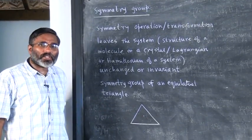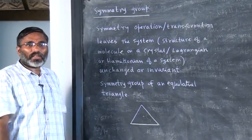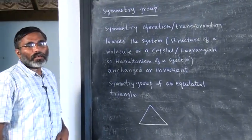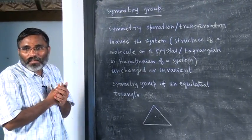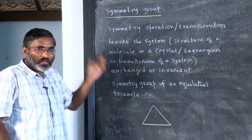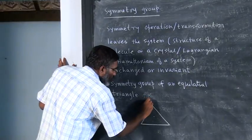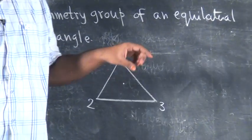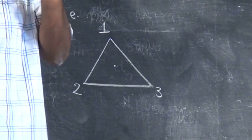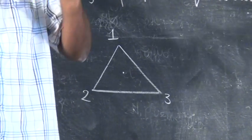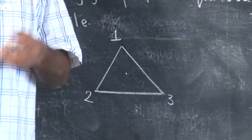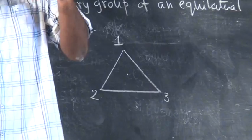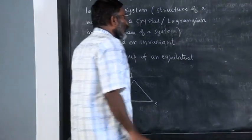I want to list down what are all operations that will leave this equilateral triangle invariant. For that purpose, let me put some labels for these vertices. Let me call this one as 1, this one as 2, this one as 3. When I label it, when I rotate it, I know I have rotated because the labels have changed, correct? But that is only for our bookkeeping purposes. The triangle is not changing, only we are painting these labels. This is for our bookkeeping purposes.